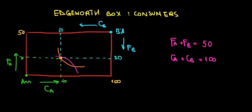In this video, let's connect the concept of marginal rate of substitution with the Edgeworth box. Recall that the marginal rate of substitution has something to do with the indifference curve — namely, it is the slope tangent to a specific point on the indifference curve.